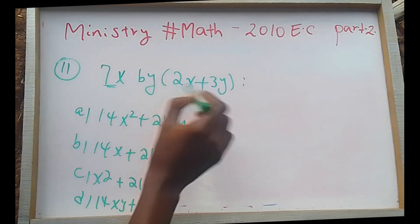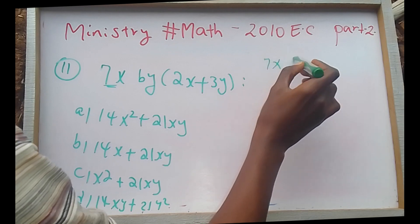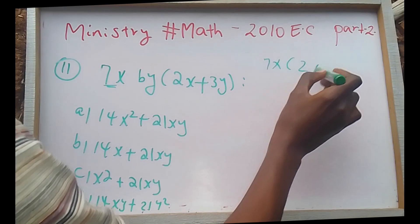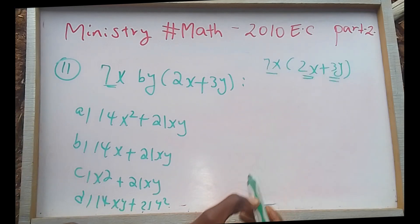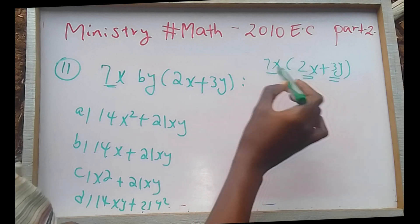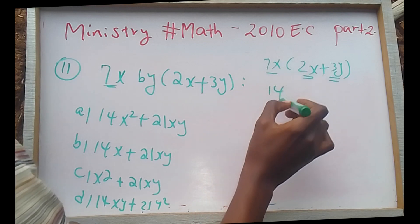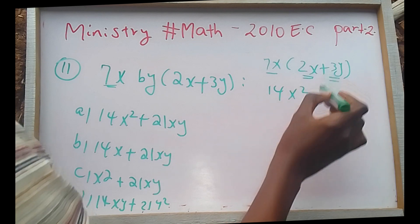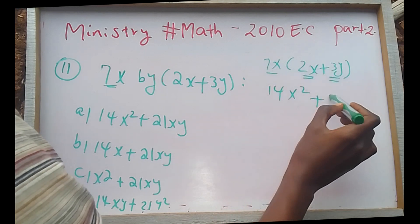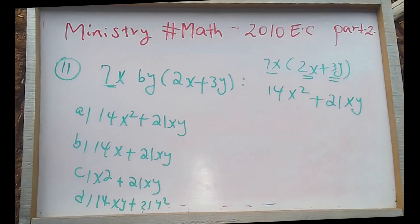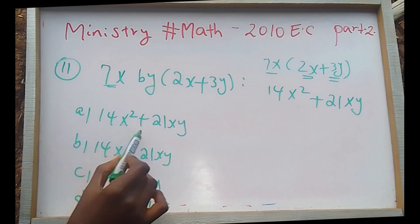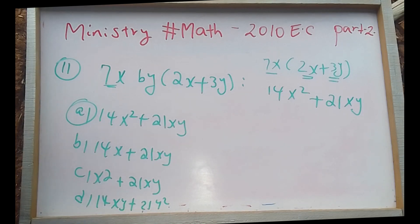So 7x times (2x + 3y): 7x times 2x gives x squared terms, and 7x times 3y gives 21xy. The answer would be 14x squared plus 21xy. That is an important result.